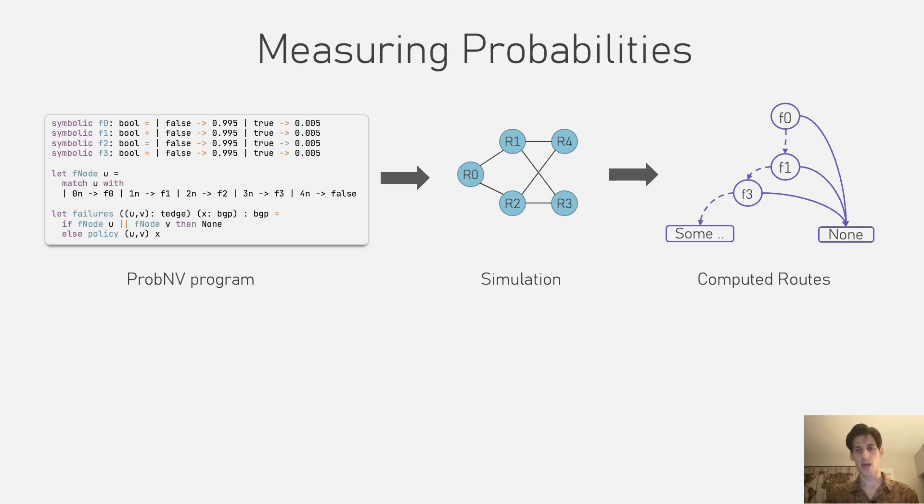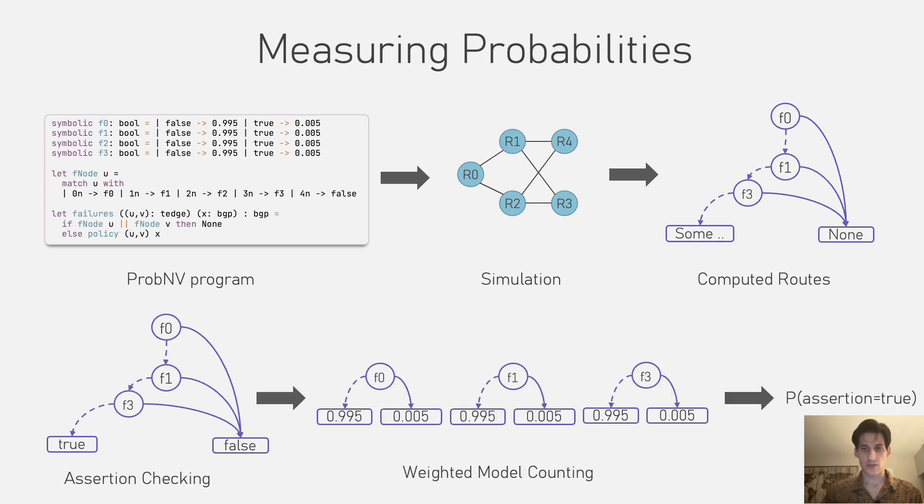For instance, checking whether or not a node has a route to the destination, we just need to assert that the optional value is constructed using the sum constructor. Finally, we can combine the computed assertions with the distributions of the symbolics,